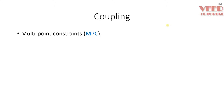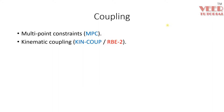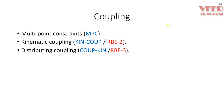In Abaqus, we can define coupling by three types. The first one is called the Multipoint Constraint. The second one is the Kinematic Coupling, also called KinCoup or generally RB2 element. The third one is called the Distributed Coupling, or KubKin, generally called RB3 element.